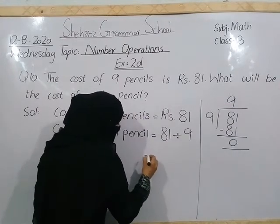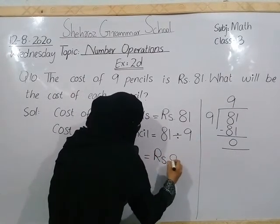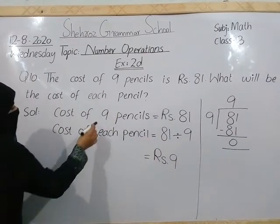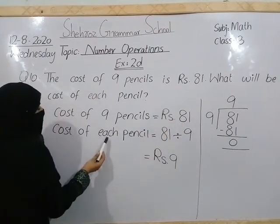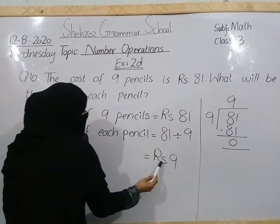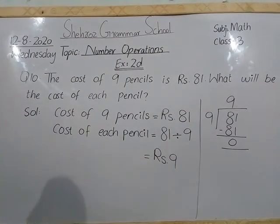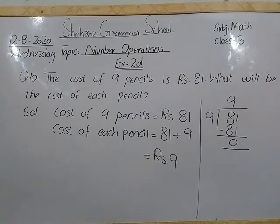और quotient क्या है students? 9. It means हर एक pencil की price क्या है? 9. ठीक है students — 9 pencils की price 81 दी गई है, हमने हर एक pencil की find करनी थी, जो 9 रुपीज है. ठीक है students. आप लोगों ने question number 10 की practice करनी है, और इसका homework करना है. Okay? I love it.